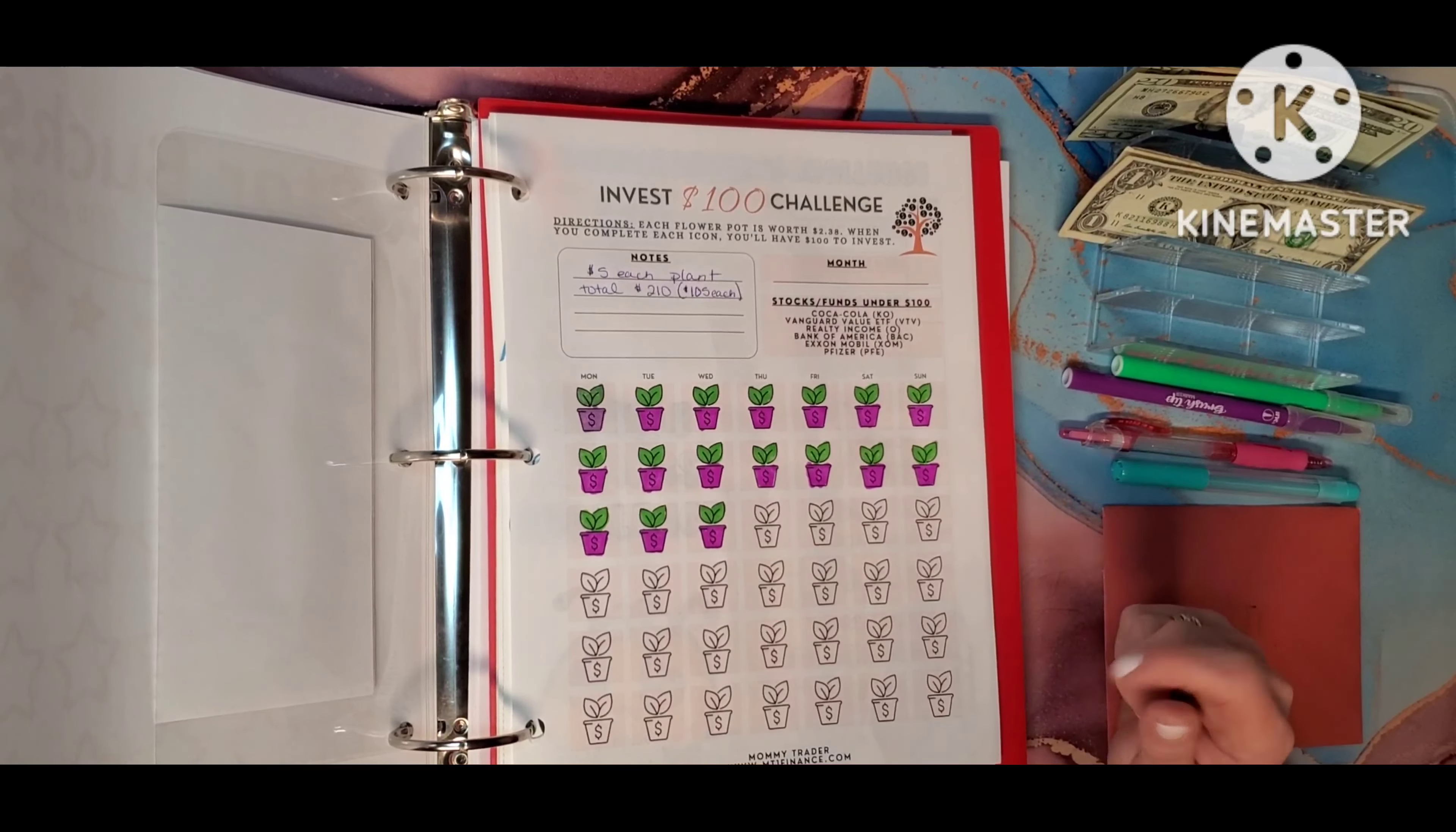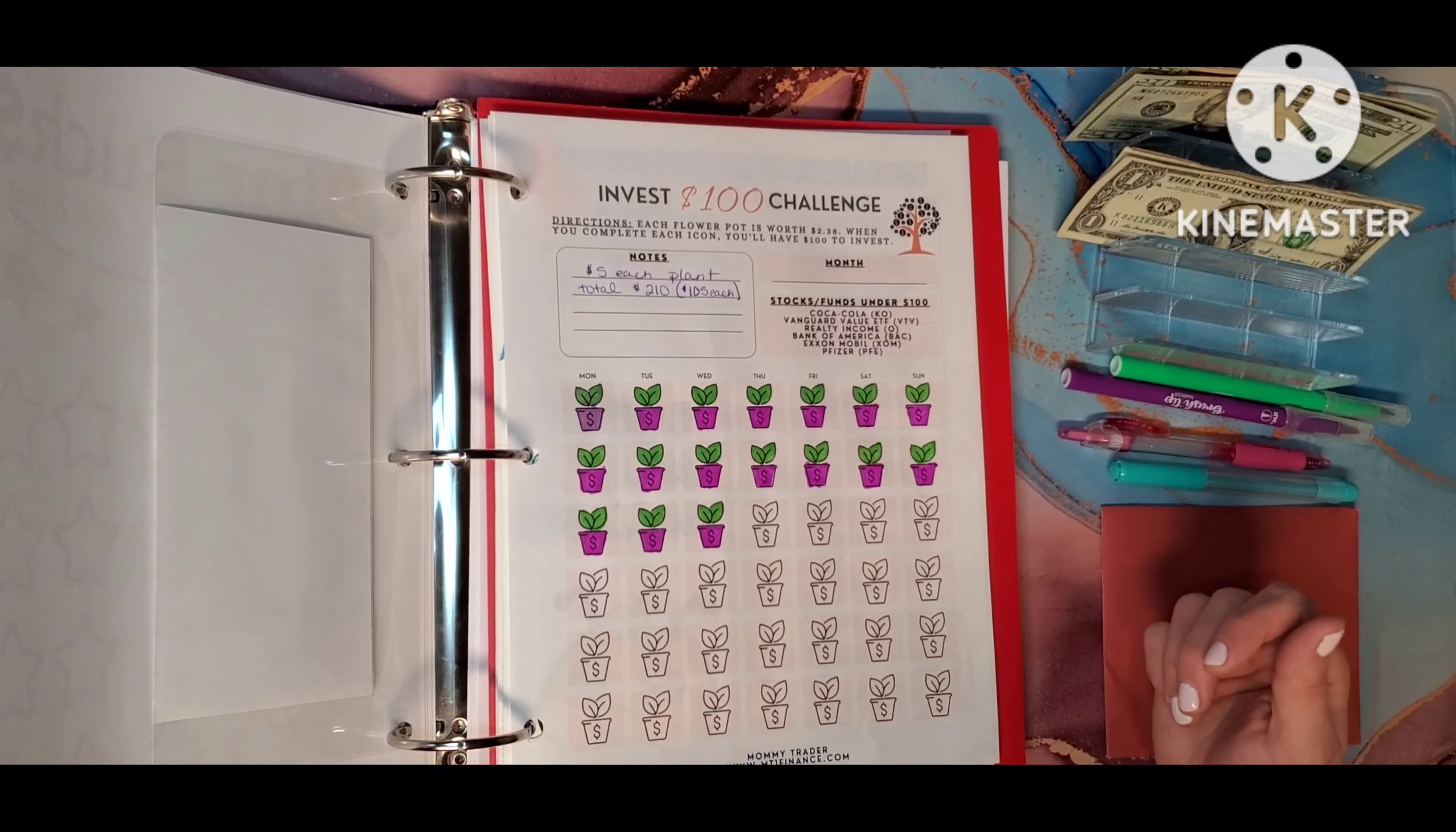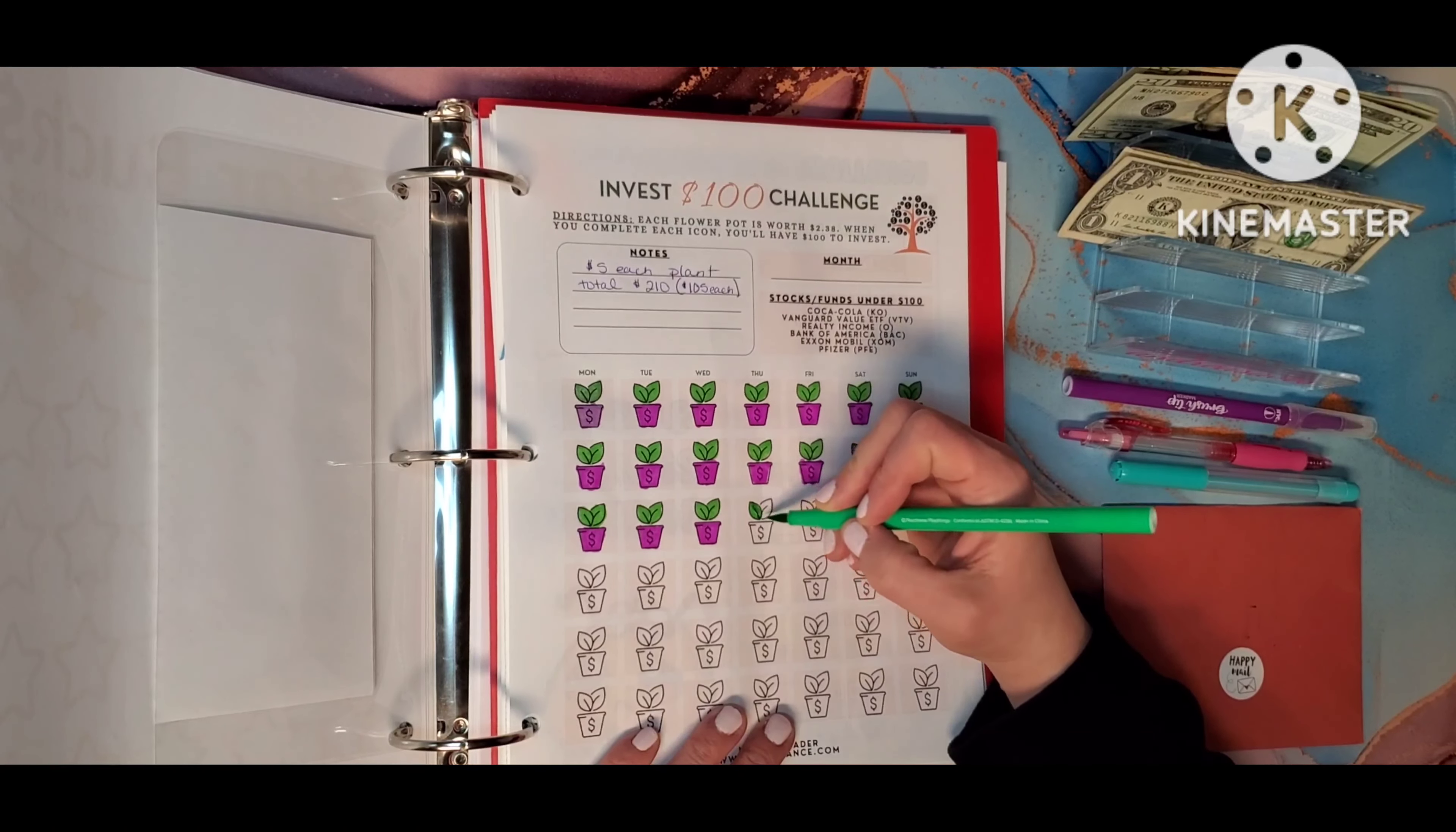This is the invest one hundred dollars challenge. This is by Mommy Trader. Her name is Shalice and this was done up so each of these plants are supposed to be worth two dollars and thirty-eight cents. And when you get to the finish, you will have a hundred dollars to invest. I am doing this my way. My husband and I each have a Robin Hood account and we invest twenty-five dollars each week. This is going to be for extra money. So I am doing five dollars for each plant. And at the end we will have two hundred ten dollars that we will split and each have one hundred five dollars extra on top of our normal every day.